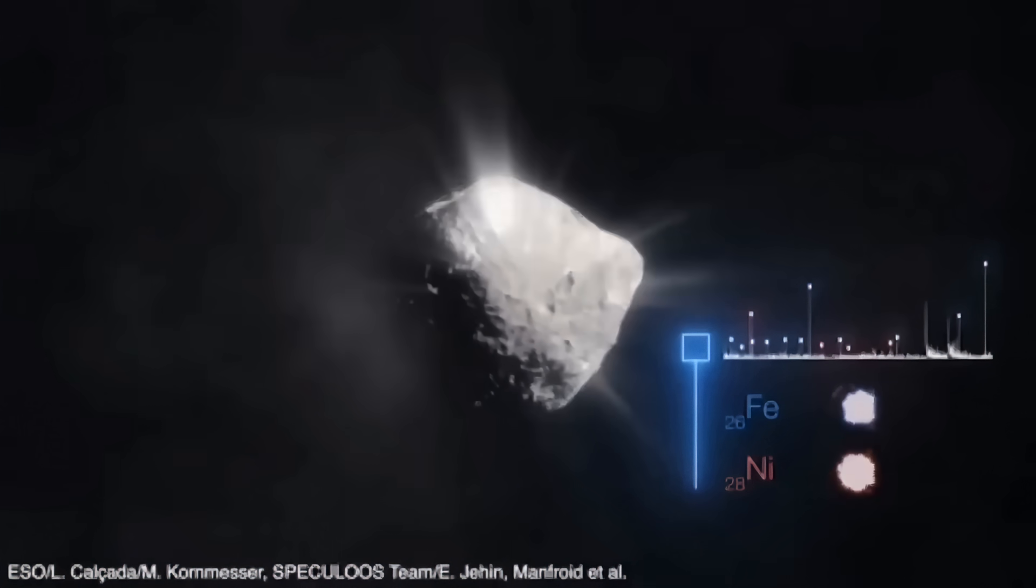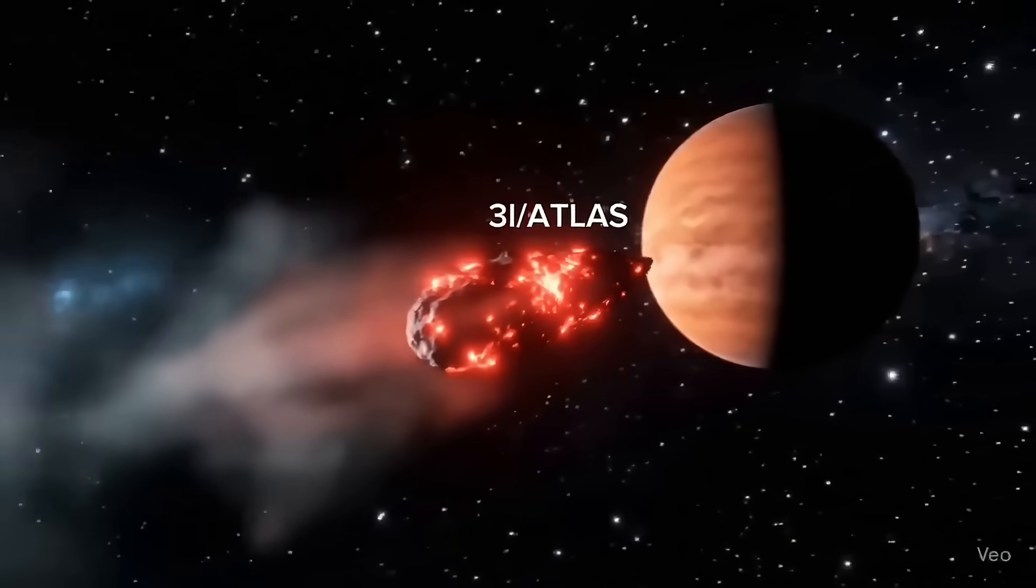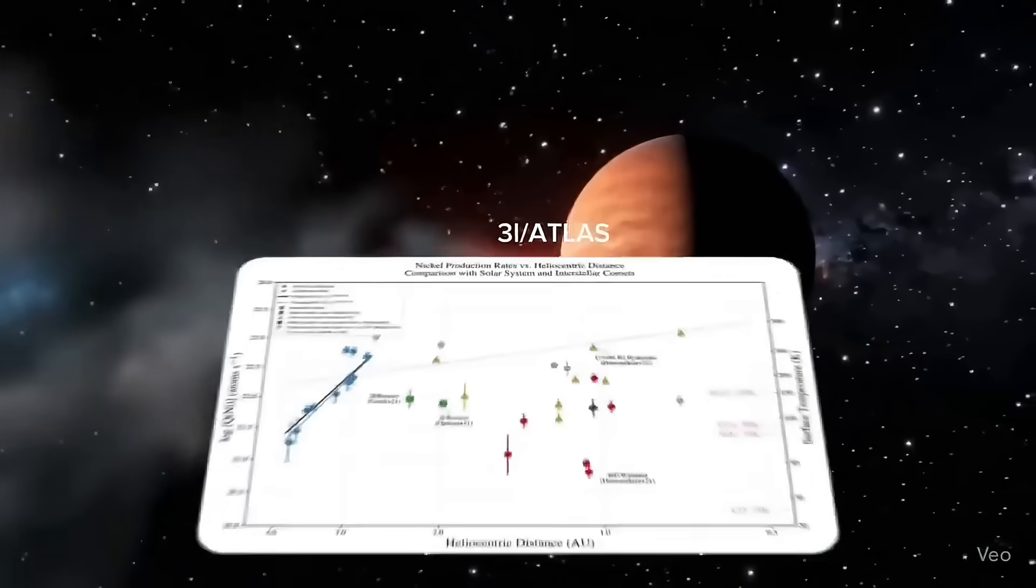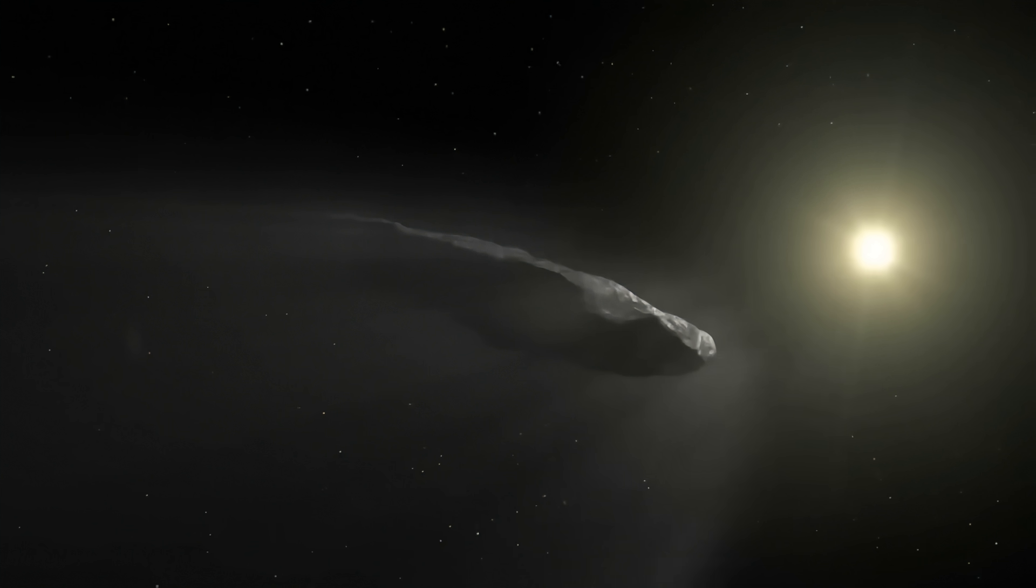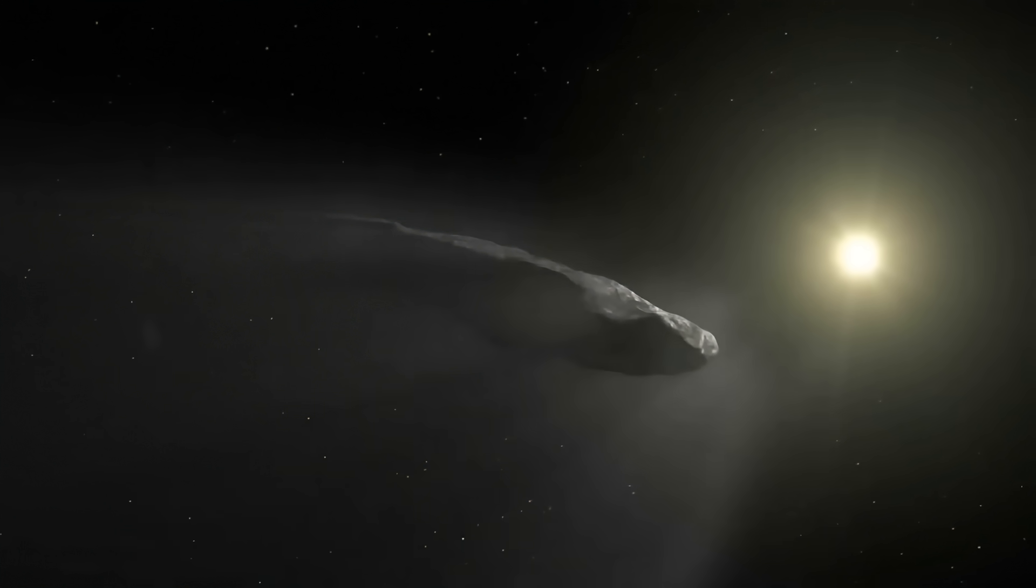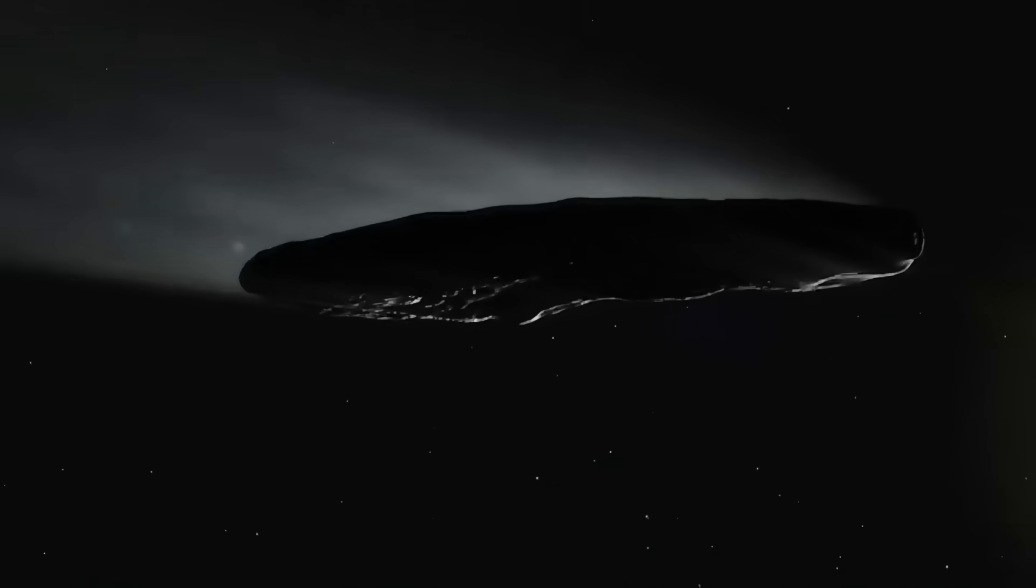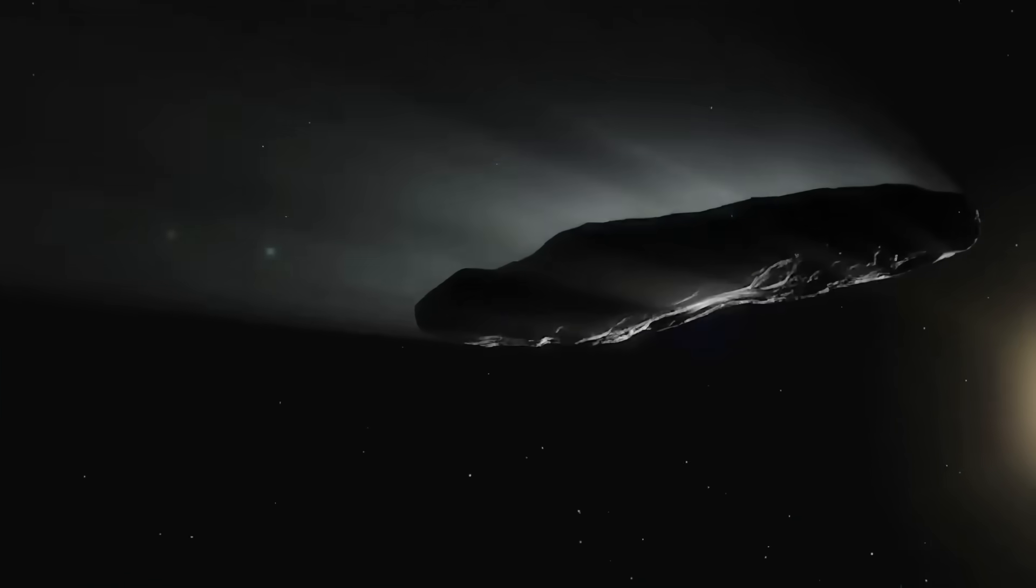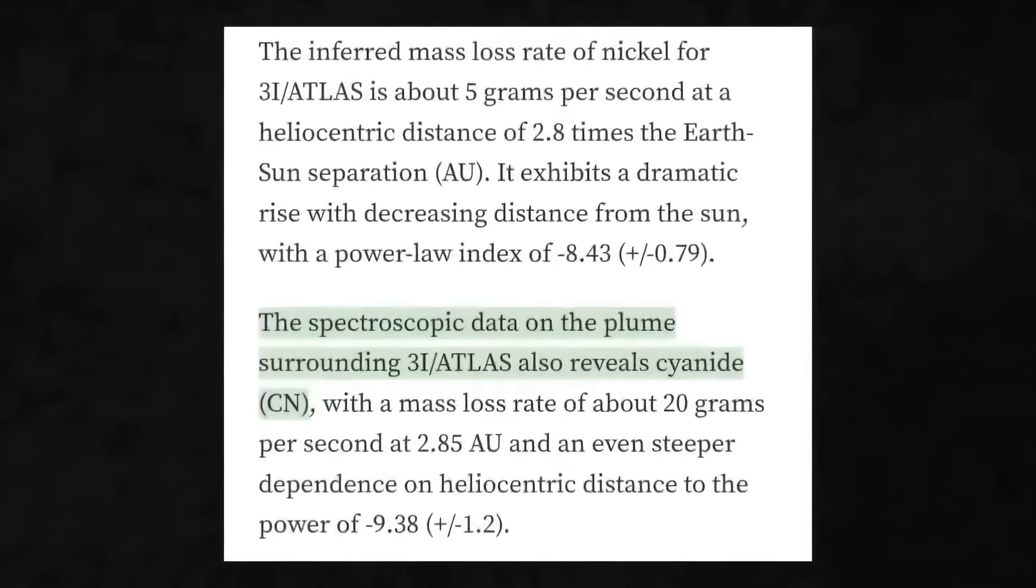Loeb warns that we need to be careful what we wish for. If this theory is true, 3I Atlas isn't just a visitor. It's a delivery system. Its carefully planned trajectory through our solar system, passing by multiple planets, suddenly makes terrifying sense. It could be releasing clouds of these engineered microscopic organisms designed to thrive in a variety of environments, from the thin atmosphere of Mars to the oceans of a moon like Europa, and even here on Earth.